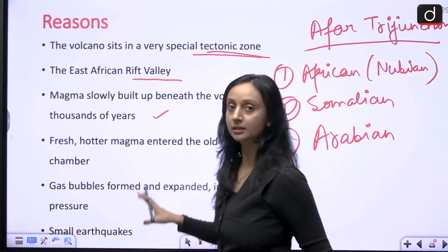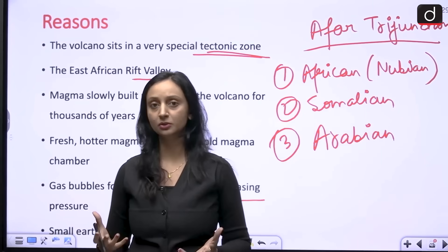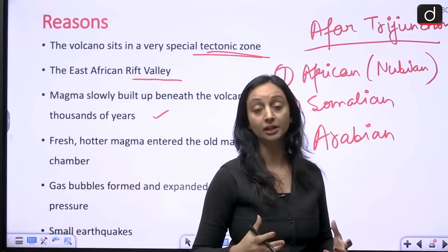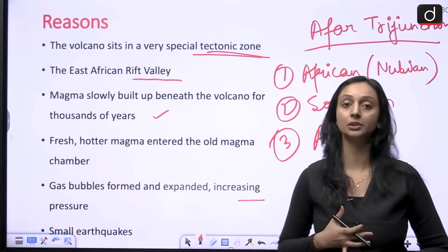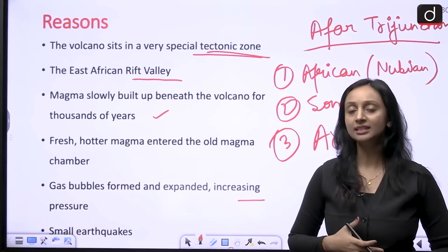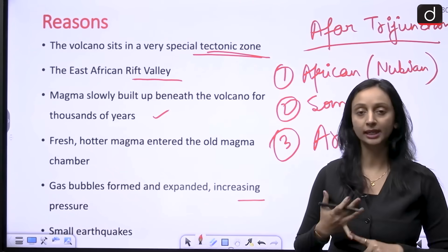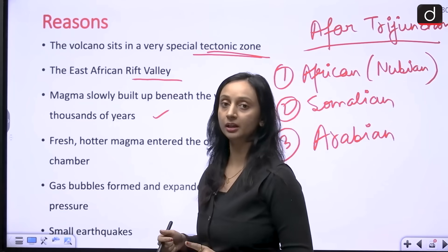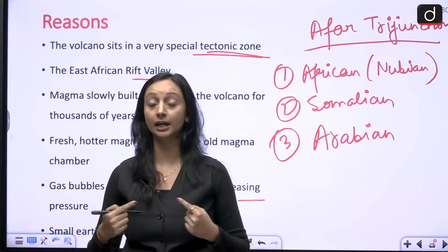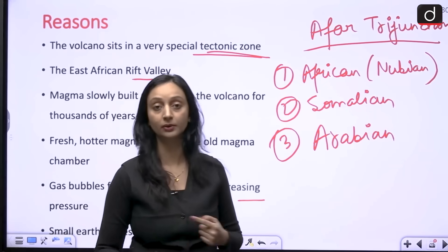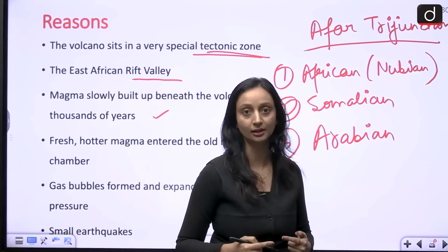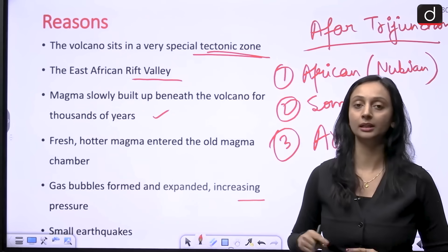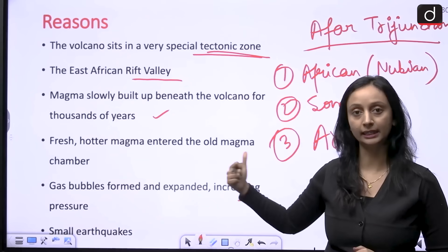So there are different reasons behind this eruption, and all these things combined could have led to the eruption of this volcano after nearly thousands of years. This tells us that even if a volcano is dormant for many, many years, it can still turn into an active volcano if the geographical and geological conditions are right — and that is exactly what happened in the case of Haley-Kappi.